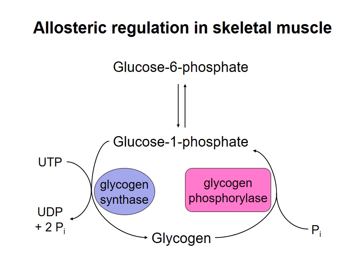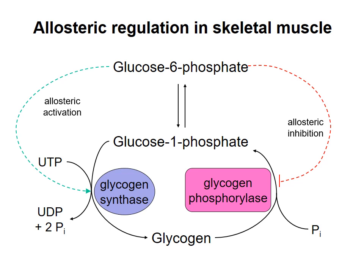In addition to regulation by phosphorylation, glycogen synthase and glycogen phosphorylase are regulated by allosteric effectors. Remember that allosteric effectors can only have their effects when they are at high concentration. In muscle, glucose 6-phosphate allosterically activates glycogen synthase, indicated by the green dashed arrow. G6P also allosterically inhibits glycogen phosphorylase, indicated by the red dashed line. When G6P concentration is high, there is an excess of glucose monosaccharide in the cell, and it's a great time to store some of that glucose as glycogen. Therefore, the enzyme that makes glycogen is activated, and the enzyme that degrades glycogen is inhibited.